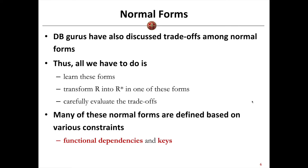We have different normal forms. Each normal form will be a trade-off between redundancy reduction versus quality and efficiency.